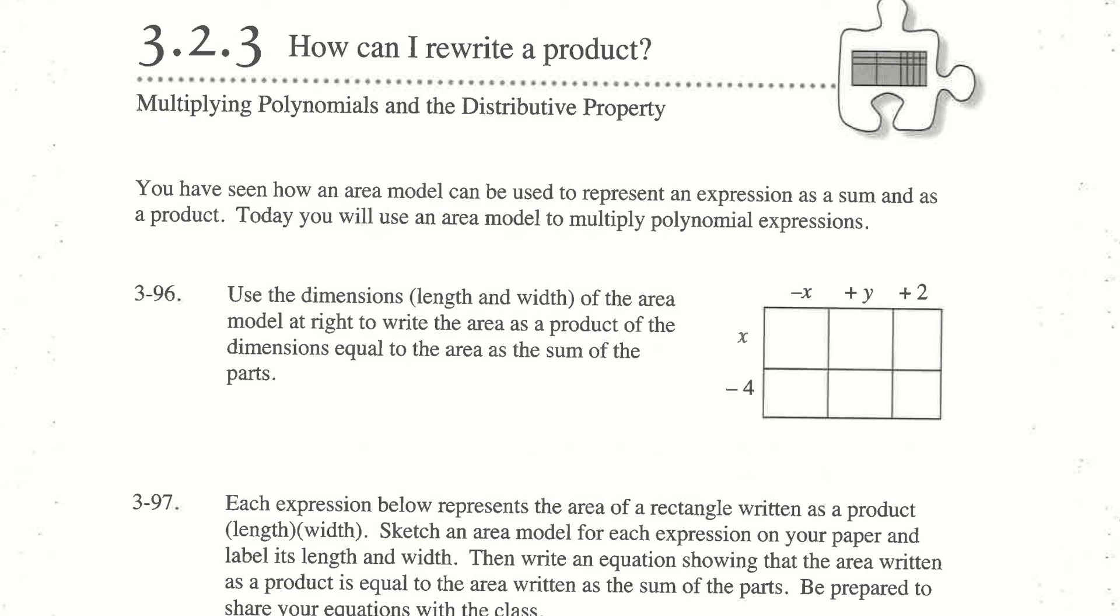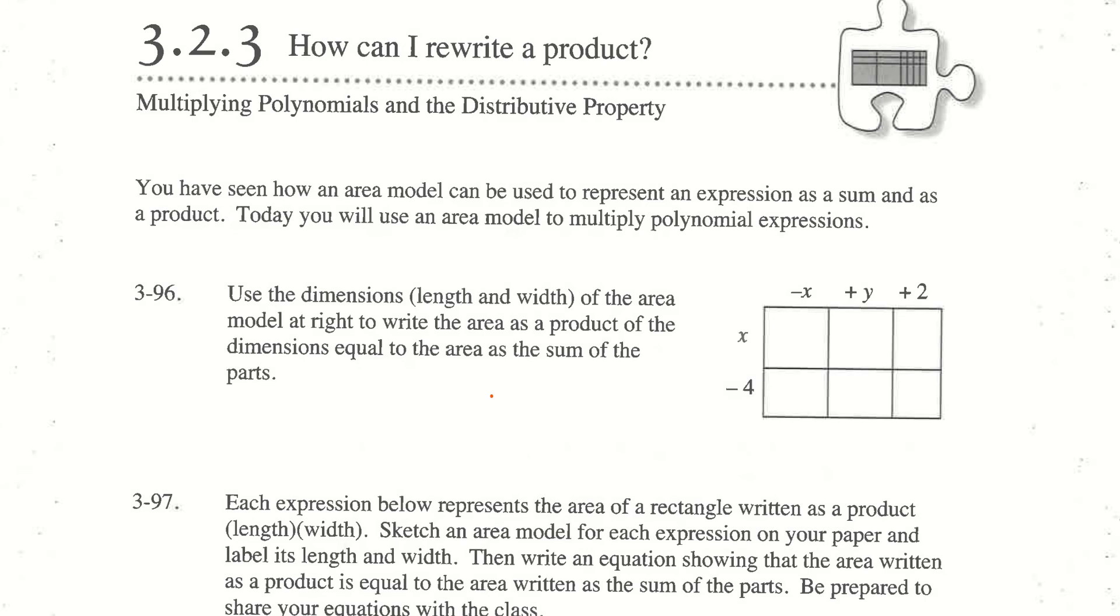In question 96, we're asked to use the dimensions, the length and width, of the area model to write an area in two ways: as a product of the dimensions equal to the area as the sum of the parts. This is one of the ones that I do want you to do. I want you to do 96, and I'm looking for something like a length times the width equals the sum of the parts.